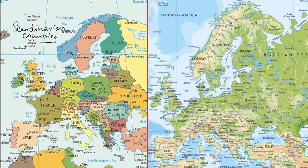There are actually five Scandinavian countries. The first one is Finland, then Sweden, then Norway, the fourth one is Denmark, and the fifth one is Iceland.